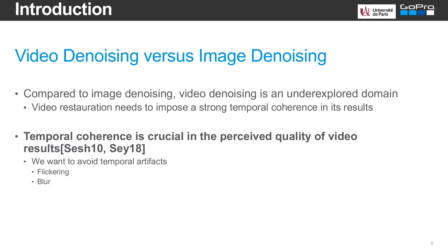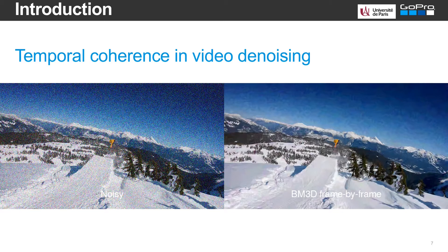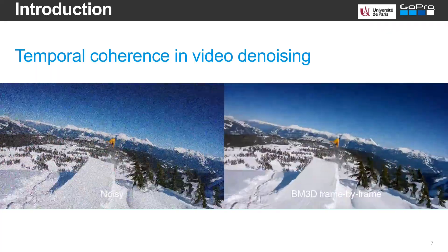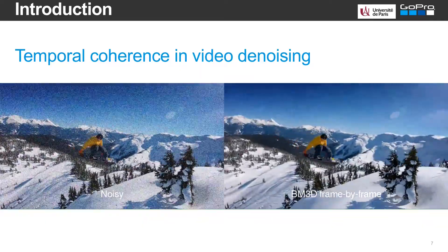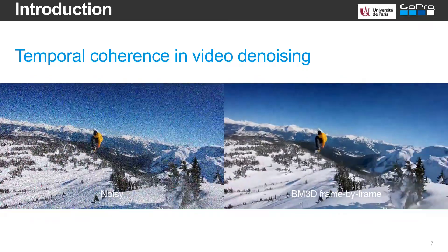In particular, one has to impose temporal coherence in the results, and we know that this temporal stability is crucial in the perceived quality of the results. An example to illustrate this point is the following: a noisy sequence has been denoised with the famous BM3D image denoiser, so each frame has been denoised individually, separately from the rest. As we can see, the result features annoying temporal artifacts — flickering — which are particularly annoying and visible.